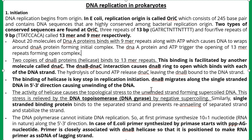The binding of helicase (DnaB) is a key step in replication initiation. DnaB migrates along the single-stranded DNA in the 5' to 3' direction, causing unwinding of the DNA and degradation of hydrogen bonds between nucleotides. The activity of helicase causes topological stress to the unwound strand, forming supercoiled DNA. This stress is relieved by DNA topoisomerase, also called DNA gyrase, by negative supercoiling. Similarly, single-stranded binding protein (SSB protein) binds to the separated strands, preventing re-annealing and stabilizing the strands.